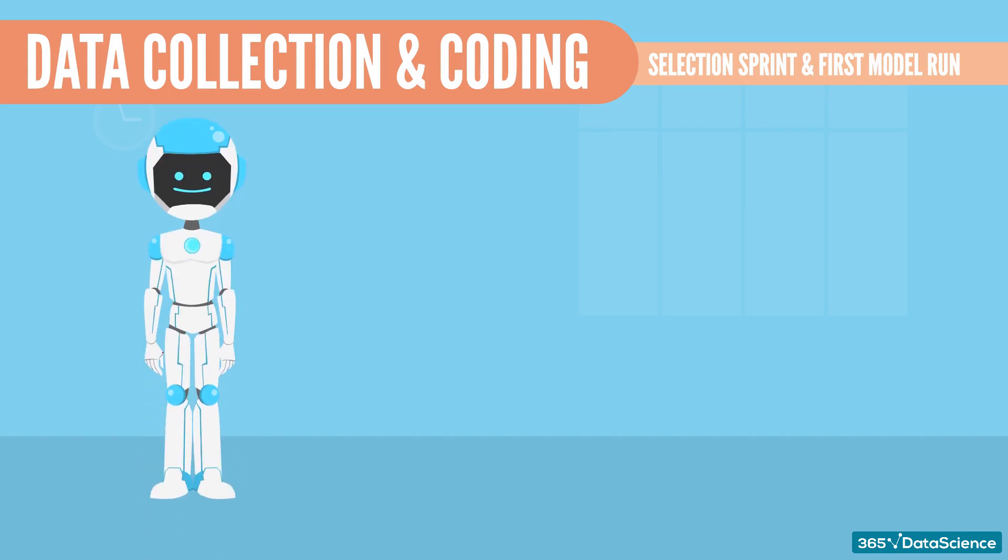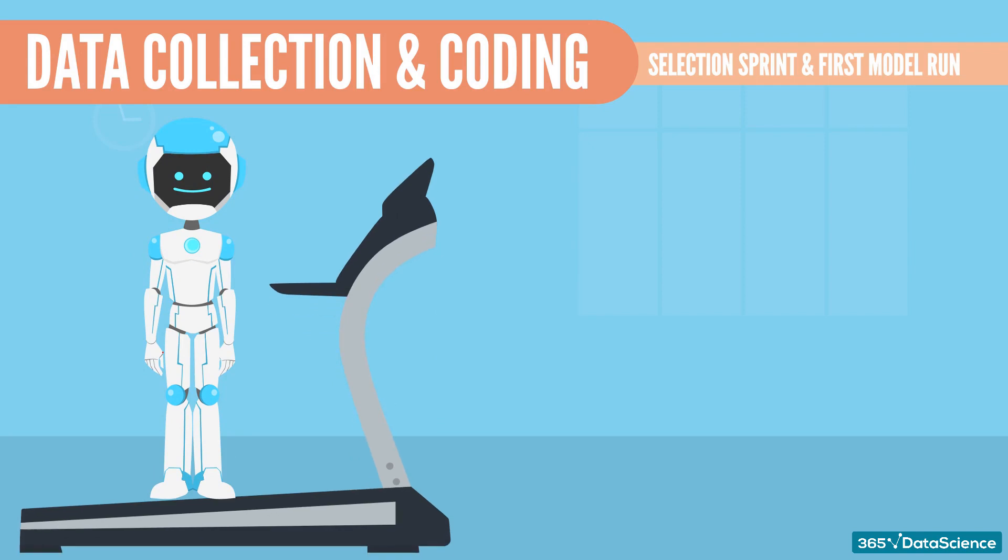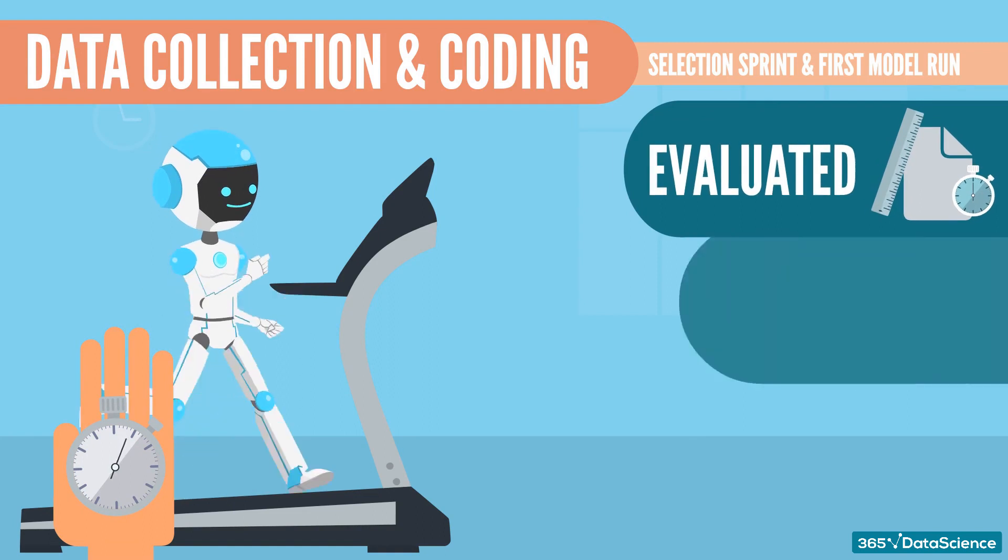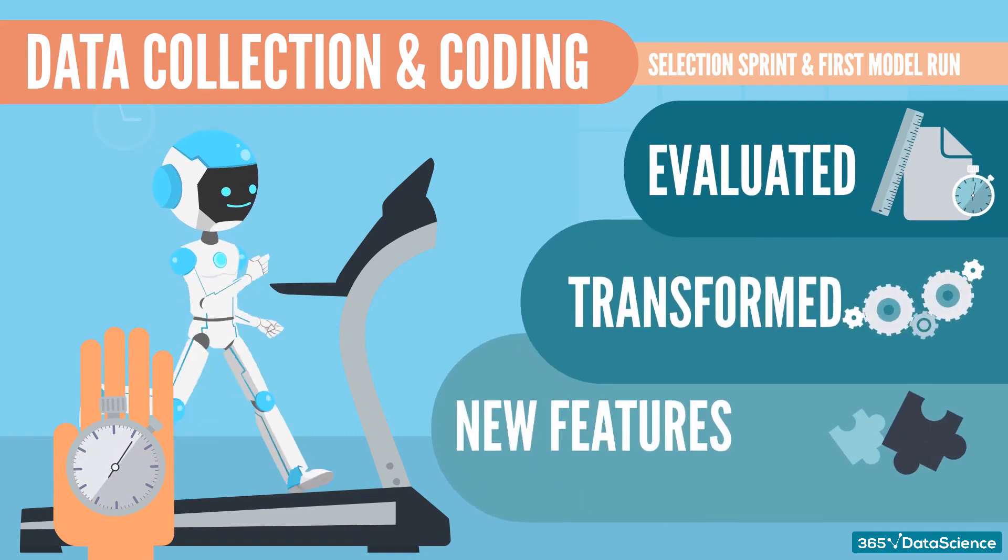While features were modeled and kind of selected during the first sprint, they were never tested in a model. So, in the second coding sprint, features are evaluated, transformed or new features are engineered, this time for predictive modeling purposes.